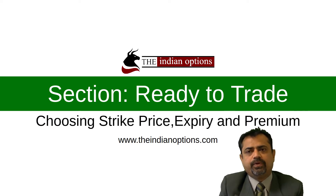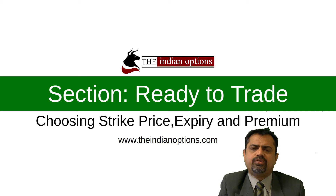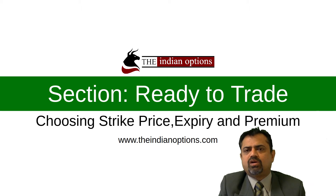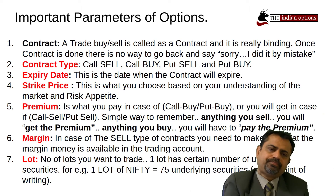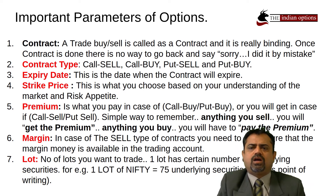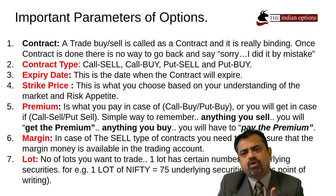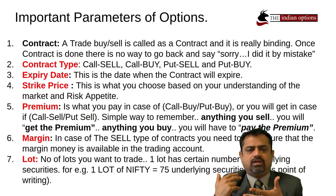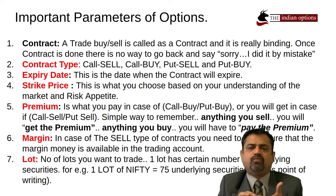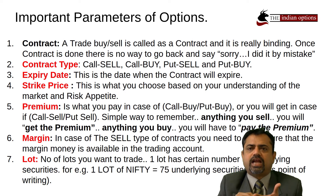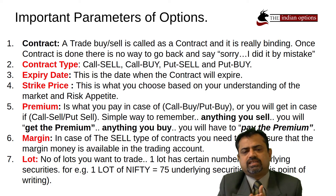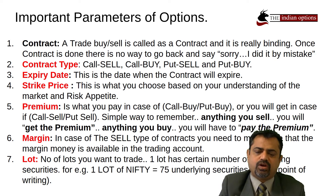Now you are ready to trade and this video will help you start trading. There are six parameters that are important when you want to open a trade: contract type (call buy, call sell, put buy, or put sell), expiry date, strike price, premium, margin, and lot size. These are the six things you need to be mindful of when opening a contract.